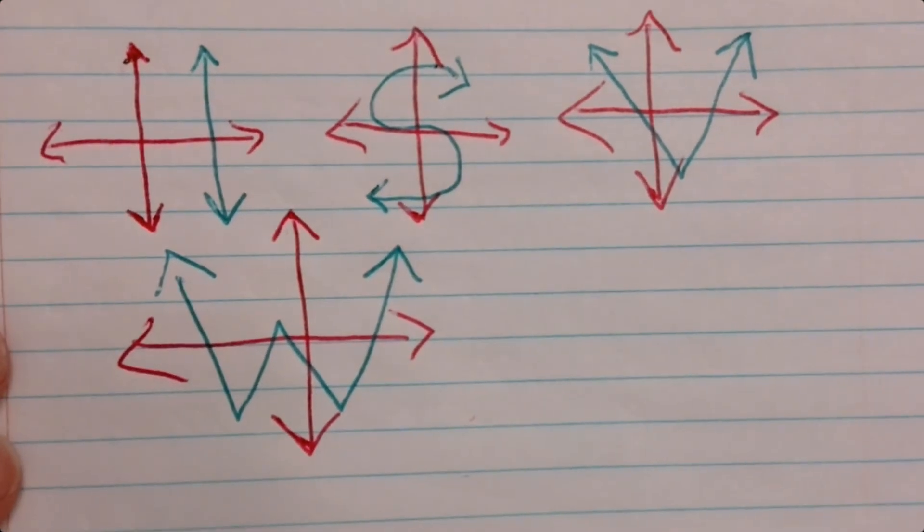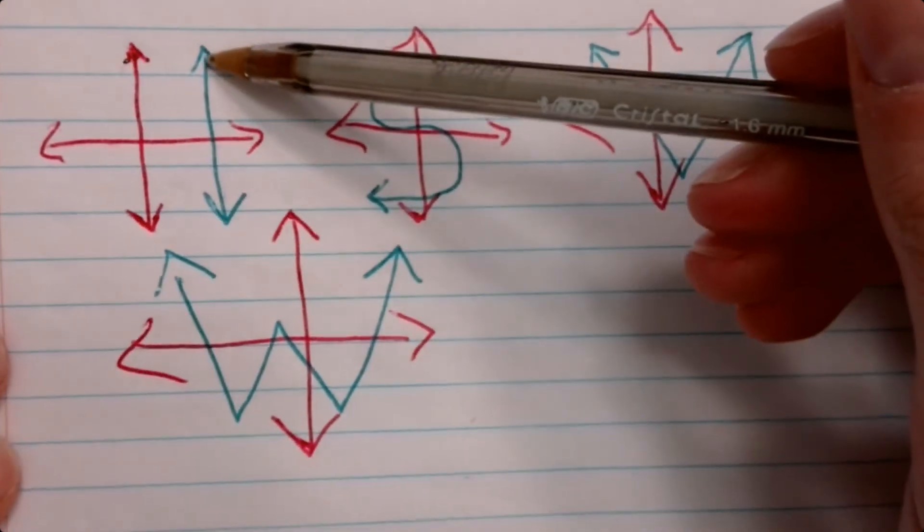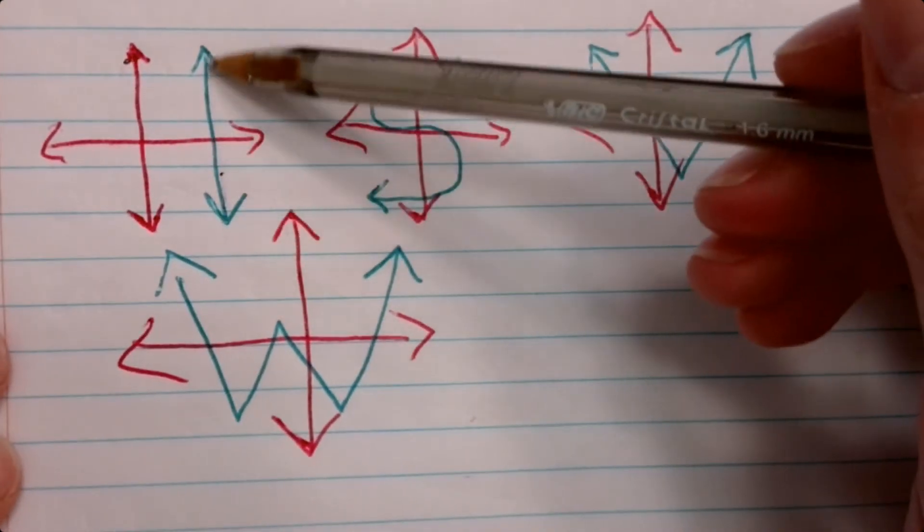Looking at this, notice how this is one straight line. I could take a ruler and recreate this line using one clean swoop. That means it is linear.